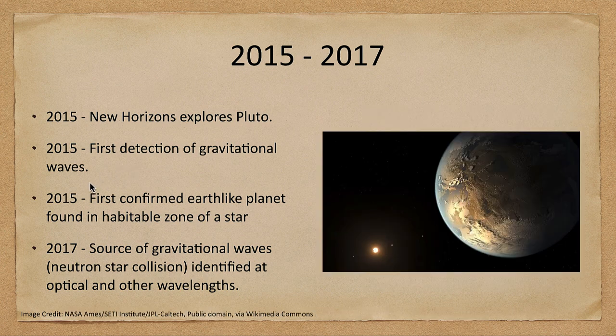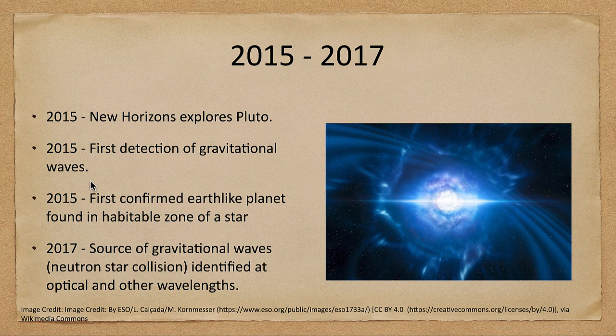Again in 2015, we had the first confirmed Earth-like planet found to exist in the habitable zone of a star — finding more planets that may potentially be habitable. Existing in a habitable zone means it's at the right distance for liquid water to be present on the surface. In 2017, another source of gravitational waves from a neutron star collision was detected, and for the first time a gravitational wave event was also observed in visible and other wavelengths, continuing the new field of gravitational wave astronomy.